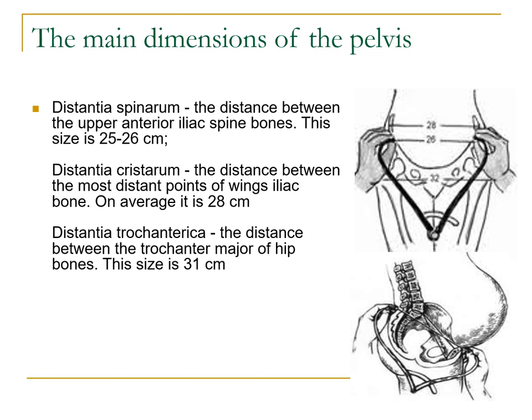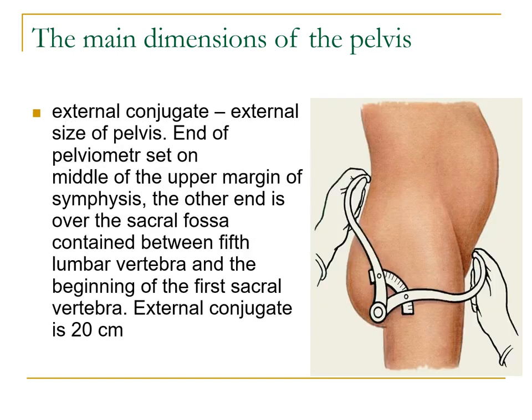The distancia spinarum is the distance between the upper anterior iliac spine bones, around 25 to 26 centimeters. Distancia cristarum is the distance between the most distant points of the wings of the iliac bone, on average 28 centimeters. Your distancia trochanterica is the distance between the trochanter major of the hip bones, and this is 31 centimeters in diameter on average.